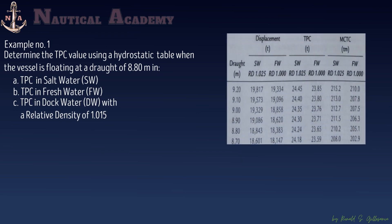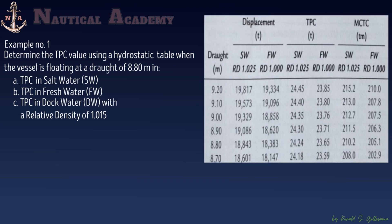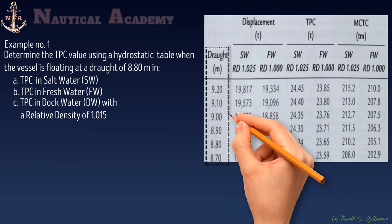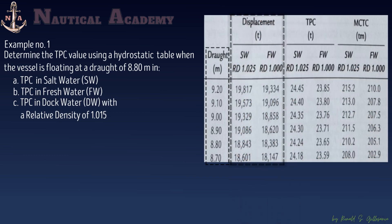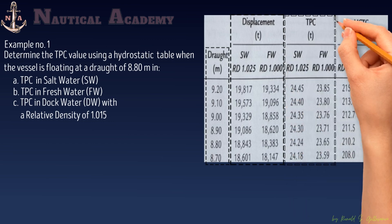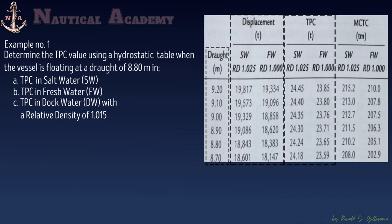This is a piece of hydrostatic table extracted from the stability information manual. The first column is the ship's draft in meters. The second and third columns are the ship's displacement in salt water and fresh water in tons. The fourth and fifth columns are the ship's TPC in tons. As we inspect the TPC values in the fourth and fifth columns, the value increases as the draft increases, so the TPC varies with the ship's draft.